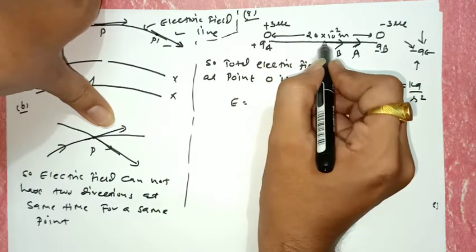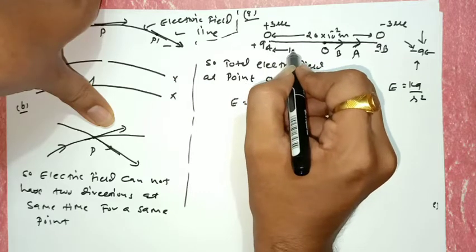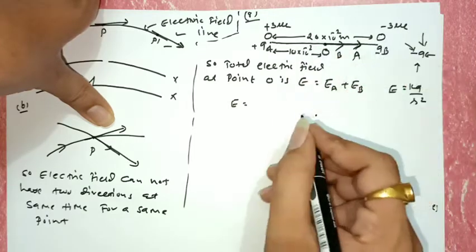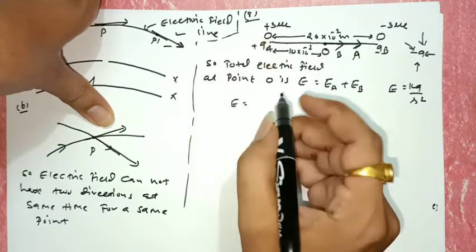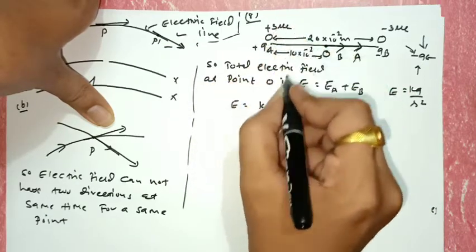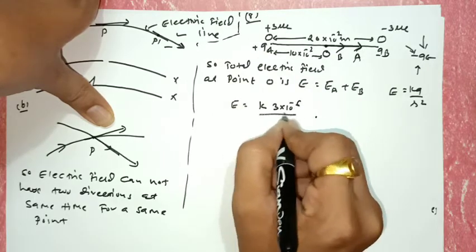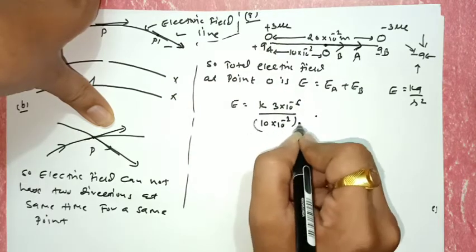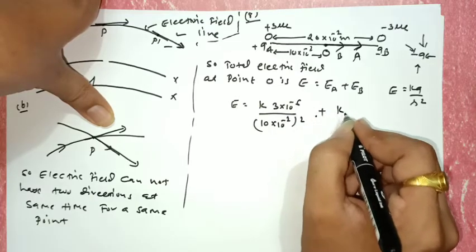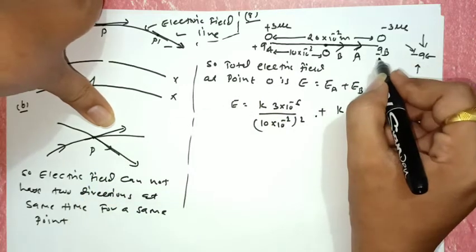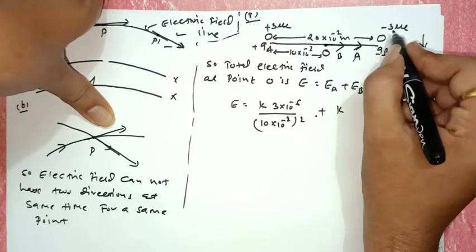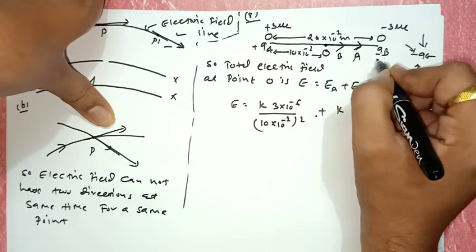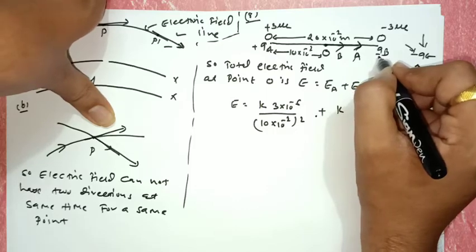Since it is the midpoint, each distance is 10 × 10⁻² m. The electric field formula gives: K × (3 × 10⁻⁶) / (10 × 10⁻²)² plus K × (3 × 10⁻⁶) / (10 × 10⁻²)². For the second charge QB = -3 μC, we don't write the minus sign because we have already accounted for the direction.